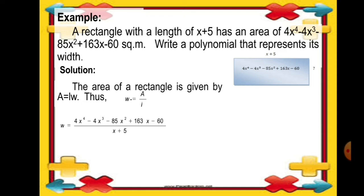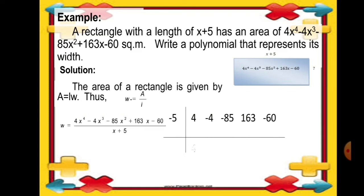Using synthetic division, we divide the two polynomials. We write the numerical coefficients of the dividend: 4, negative 4, negative 85, 163, and negative 60. The number in the division box is negative 5. Bringing down 4: 4 times negative 5 is negative 20; plus negative 4 gives negative 24. Times negative 5 gives 120; plus negative 85 gives 35. Times negative 5 gives negative 175; plus 163 gives negative 12. Times negative 5 gives 60; plus negative 60 gives remainder 0.